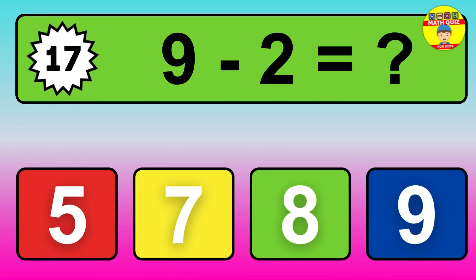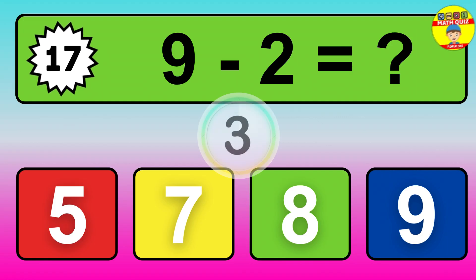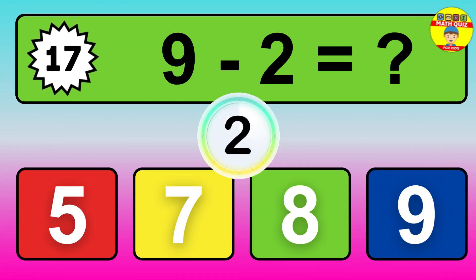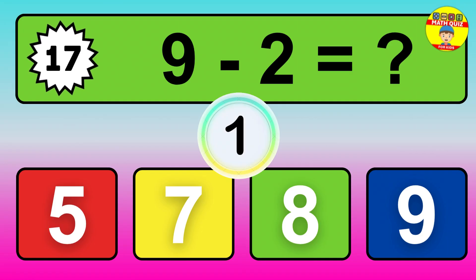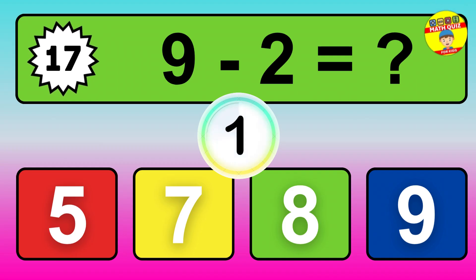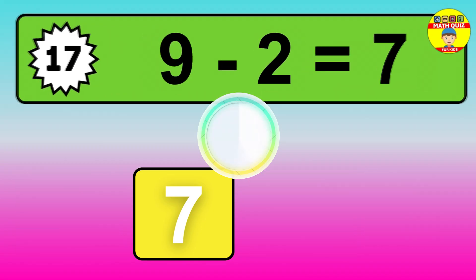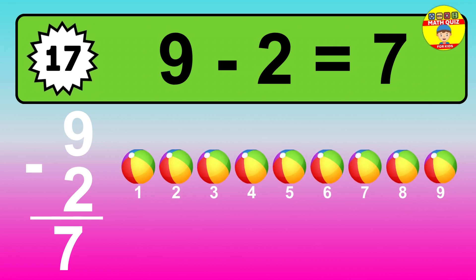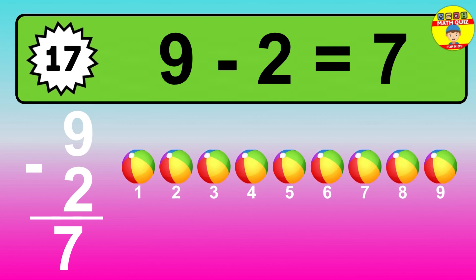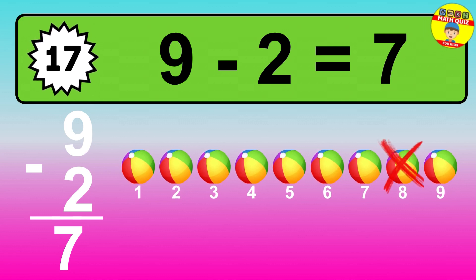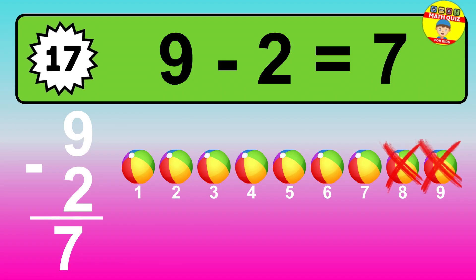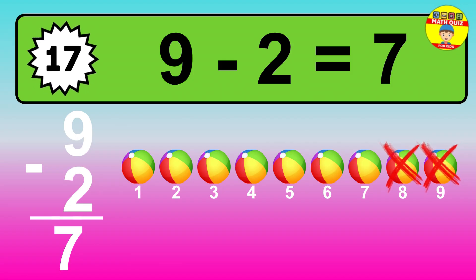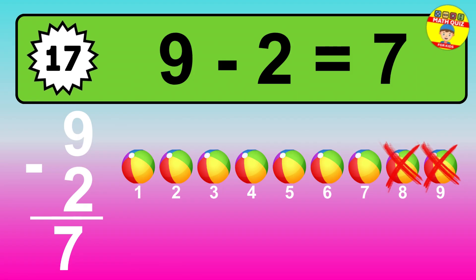Question 17: 9 minus 2 equals what? The answer is: 9 minus 2 is 7. Let's count it: 1, 2, 3, 4, 5, 6, 7.